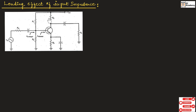In our previous discussions, when we consider an amplifier, we assume the input AC source as an ideal AC voltage source with zero resistance. But practically, these AC voltage sources will have some resistance, represented by RG, and this resistance will reduce the AC voltage appearing across the emitter diode. This effect is known as the loading effect.